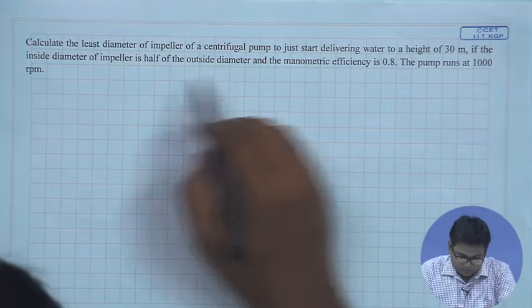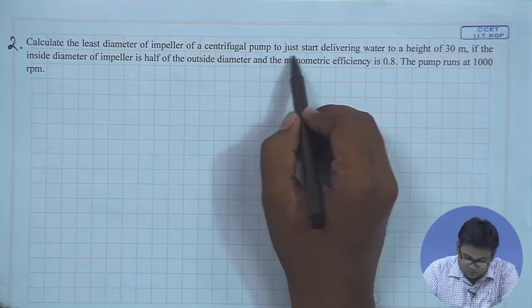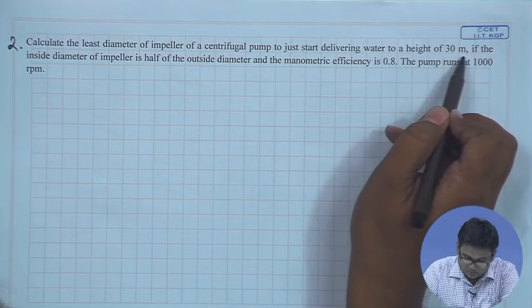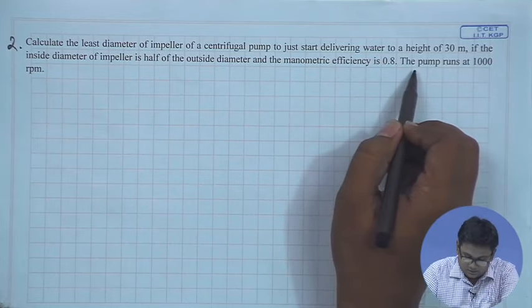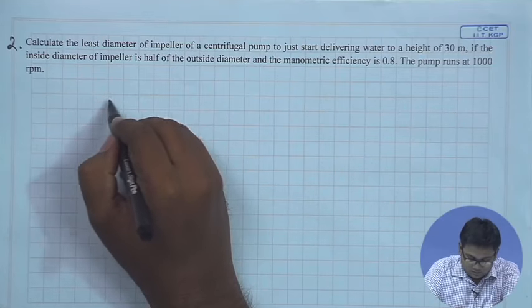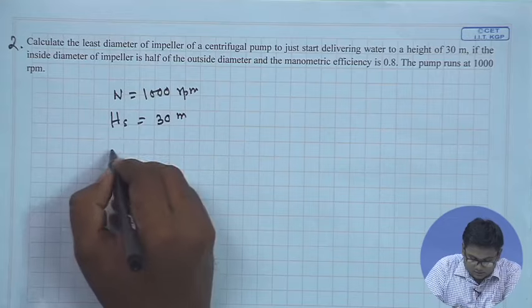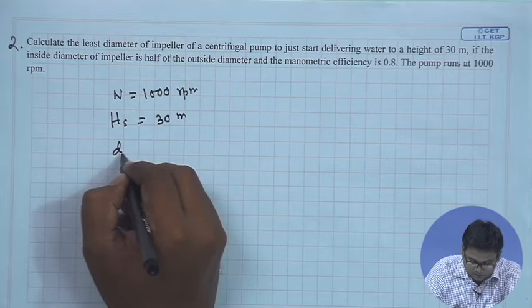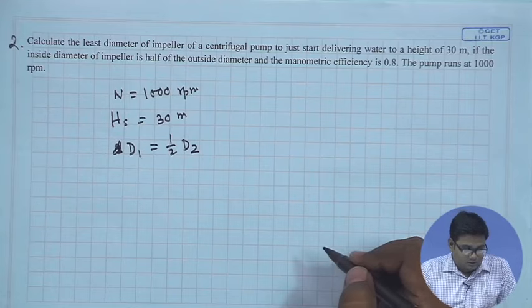Let us move to solve the next problem — a simple problem related to a centrifugal pump. Problem number 2: Calculate the least diameter of the impeller of a centrifugal pump to just start delivering water to a height of 30 m. The inside diameter of the impeller is half of the outside diameter, manometric efficiency is 0.8, and the pump runs at 1000 rpm.